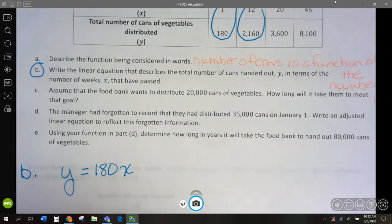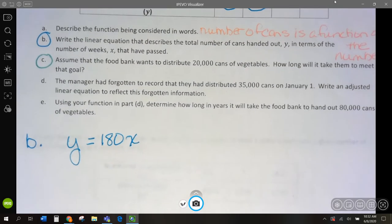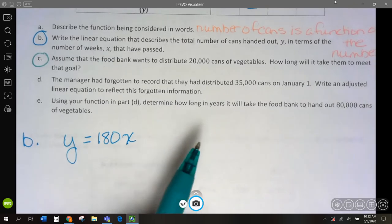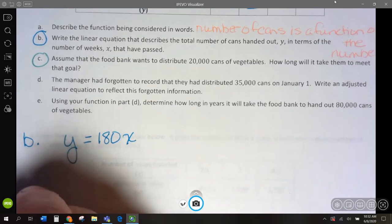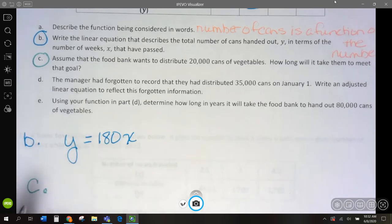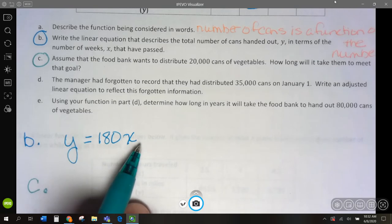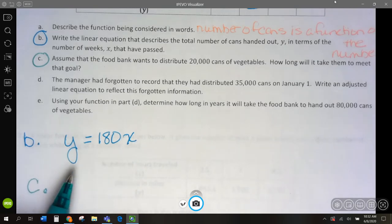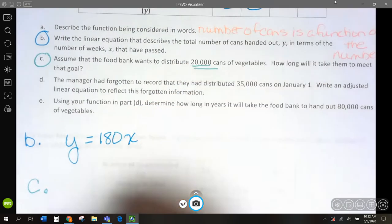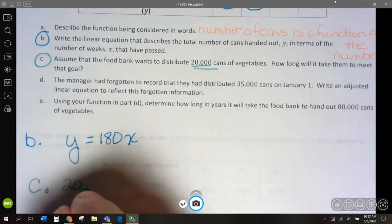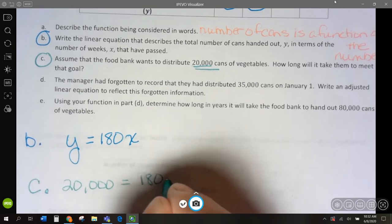Let's look at c. Assume the food bank wants to distribute 20,000 cans of vegetables. How long will it take? Remember we have the number of cans equals 180 cans per week. So we want our total number of cans to be 20,000. So 20,000 is going to equal 180x.